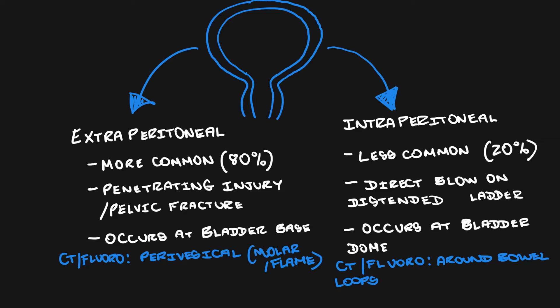In extraperitoneal rupture, you'll see a pattern of spread in a perivesical location, which has also been described as a molar tooth or flame shape around the bladder. In intraperitoneal rupture, you will see that the contrast spreads around the bowel loops and in the paracolic gutters because it's in the intraperitoneal space.